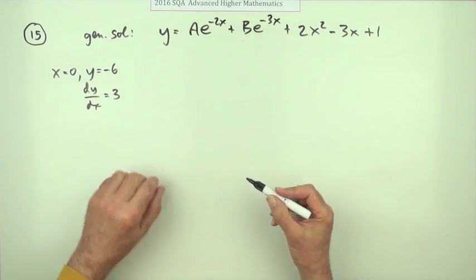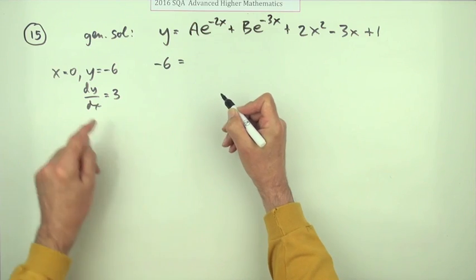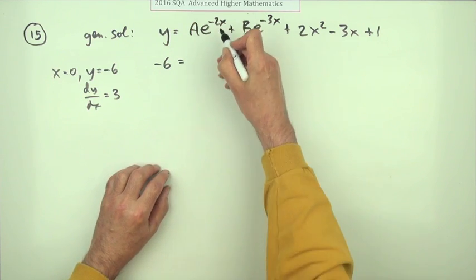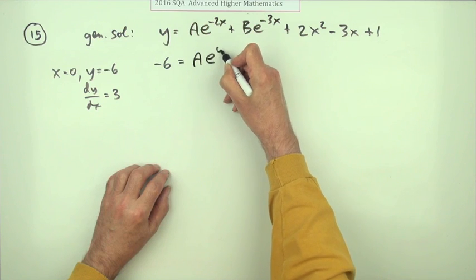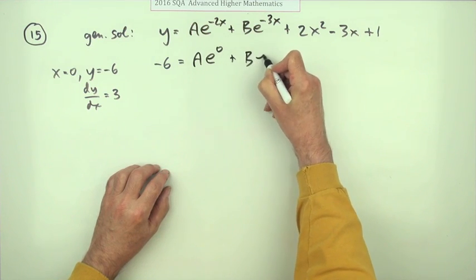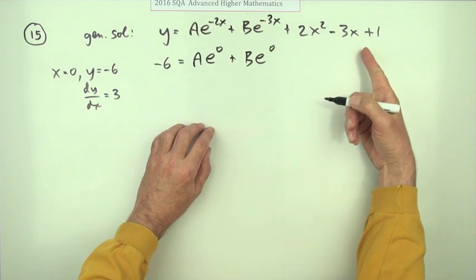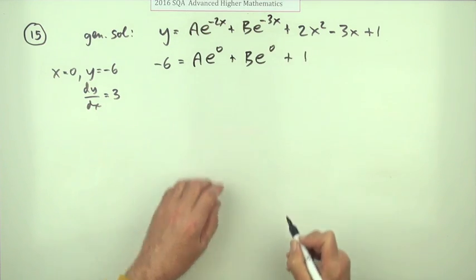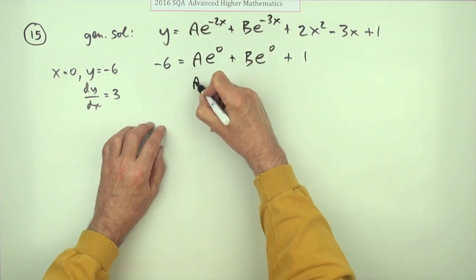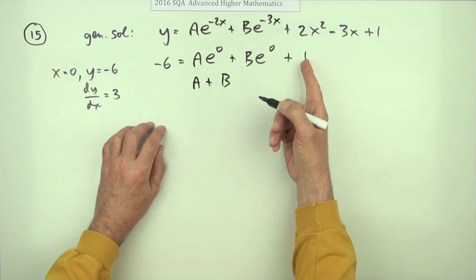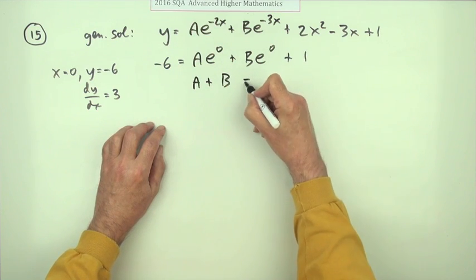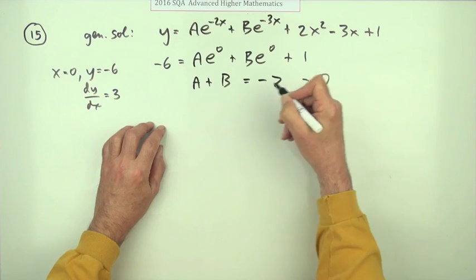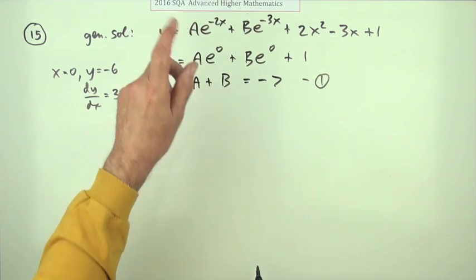We can start off straight away with this line. y is negative 6 when x is 0. If x is 0, that'll be Ae to the 0 plus Be to the 0, plus 1. So I can write a plus b, taking that across, equals negative 7. So I didn't get one of them straight off. They're still both in there.